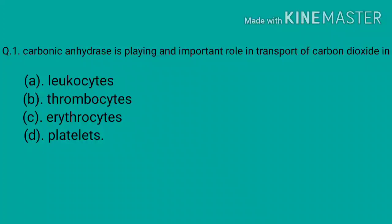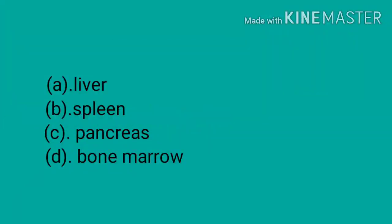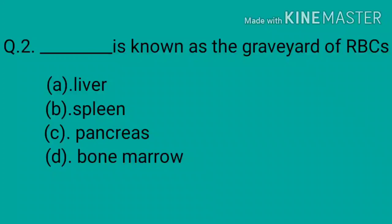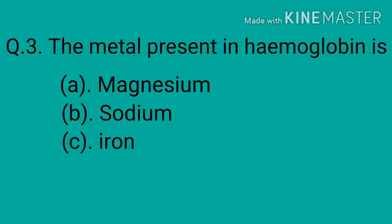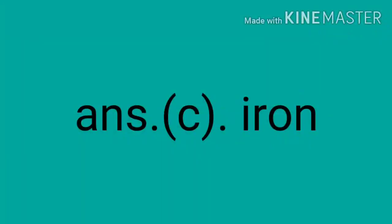Question 1: Carbonic anhydrase plays an important role in the transport of carbon dioxide in — options: leucocytes, thrombocytes, erythrocytes, or platelets. The answer is erythrocytes. Question 2: Dash is known as the graveyard of RBCs — options: liver, spleen, pancreas, or bone marrow. The answer is spleen. Question 3: The metal present in hemoglobin is — options: magnesium, sodium, iron, or copper. The answer is iron.